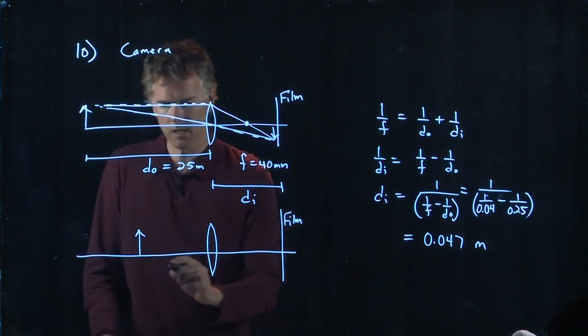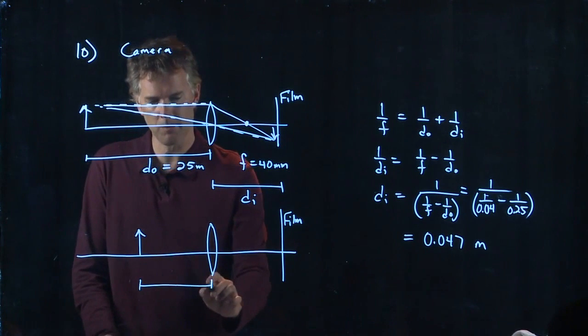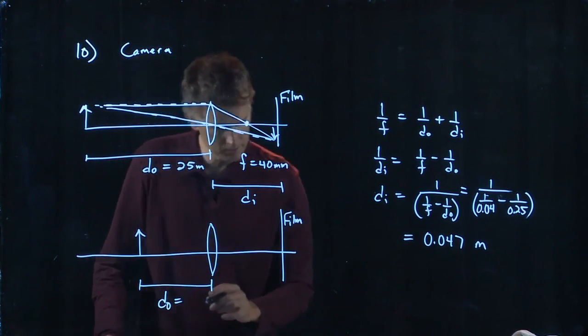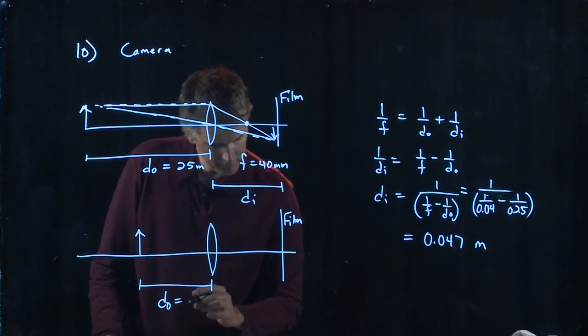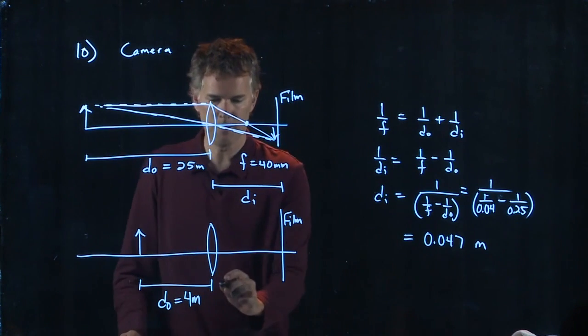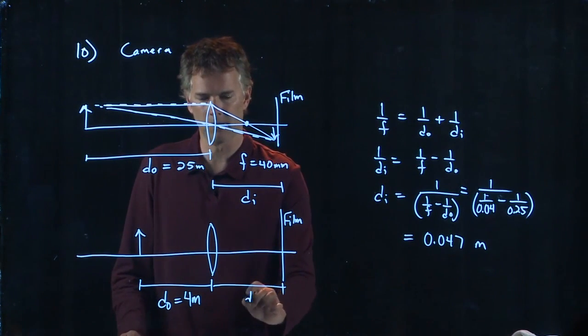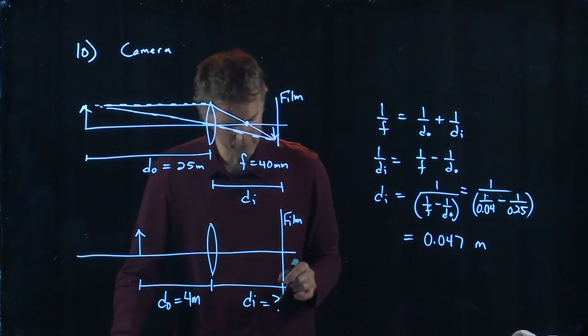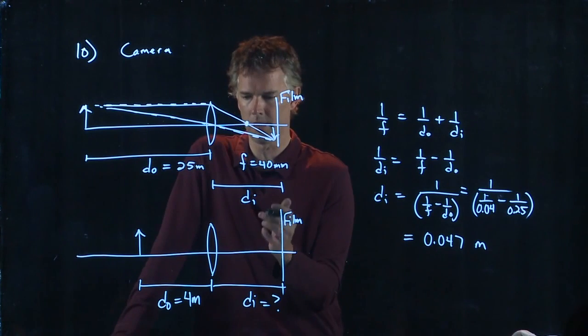So now we're going to take the object and we're going to move it much closer. DO is now going to be 4 meters. And we need to figure out what this image distance is going to be in this case. And what stays the same, of course, is the focal length of the lens.